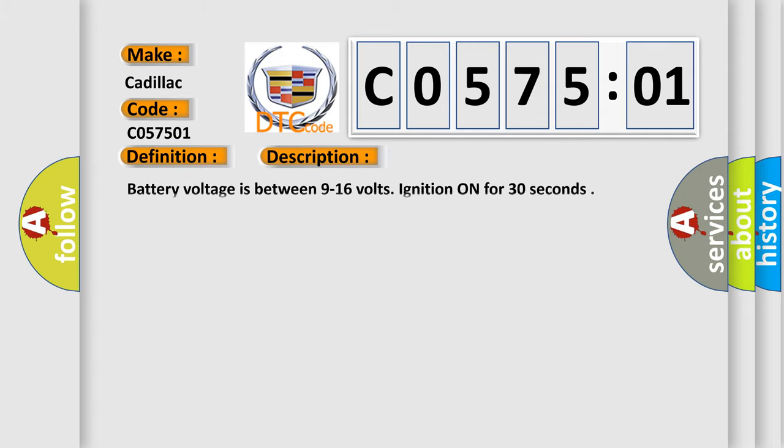And now this is a short description of this DTC code. Battery voltage is between 9 to 16 volts. Ignition on for 30 seconds.